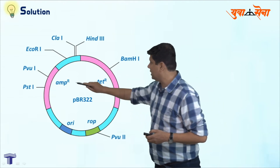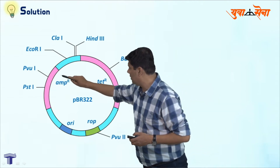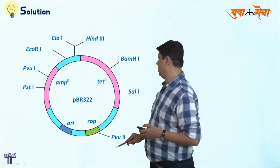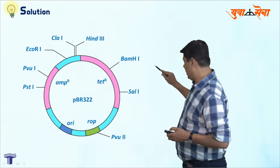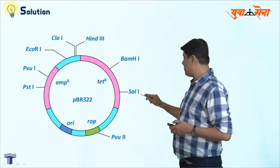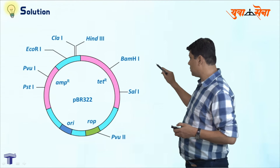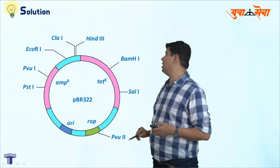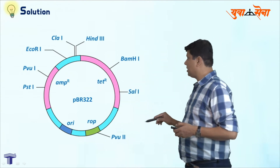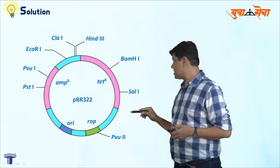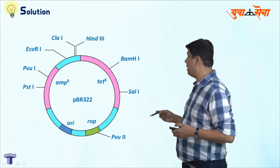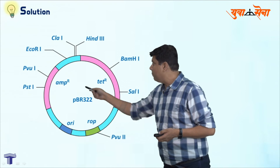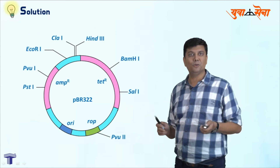These are the two enzymes which cut the ampicillin resistance gene: PST1 and PVU1. There are also two enzymes which cut the tetracycline resistance gene: BAMH1 and SAL1. So in the question, if you cut the pBR322 plasmid with PST1, it is very obvious from the diagram that ampicillin resistance will be lost. Thank you.